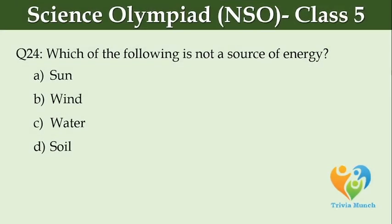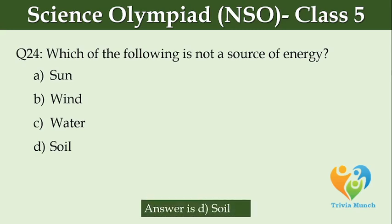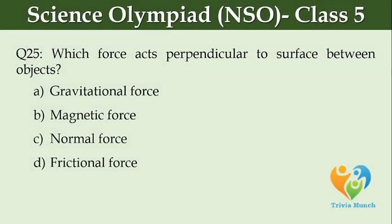Which force prevents objects from sliding easily? Option A: gravity. Option B: magnetic force. Option C: electric force. Option D: friction. Which of the following is not a source of energy? Option A: sun. Option B: wind. Option C: water. Option D: soil. Which force acts perpendicular to surface between objects? Option A: gravitational force. Option B: magnetic force. Option C: normal force. Option D: frictional force.